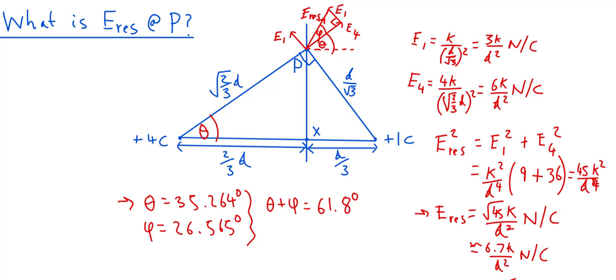To find the direction of the resultant field strength at P, we identify angle theta — the angle the line from the 4 coulomb charge to P makes with the horizontal — and angle phi — the angle between the resultant and E4 in the right-angle triangle. Working out the trigonometry gives theta equal to 35.264 degrees and phi equal to 26.565 degrees. The angle the resultant field makes with the horizontal is theta plus phi, which equals 61.8 degrees.